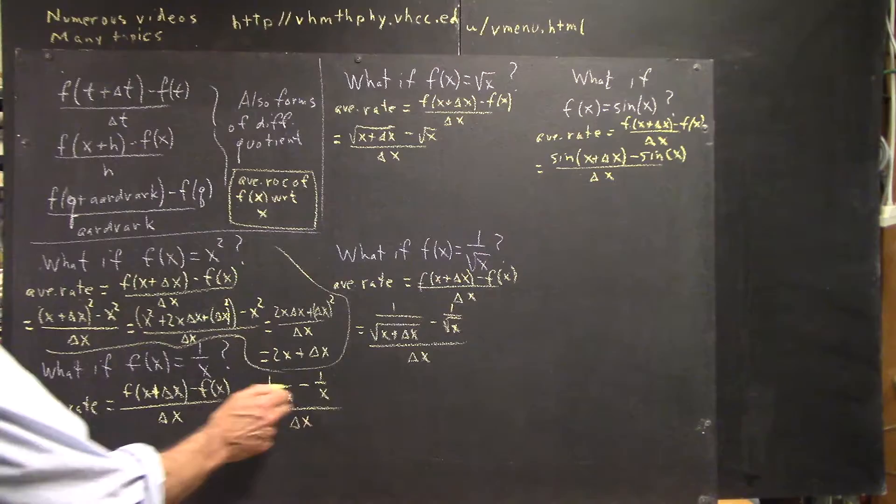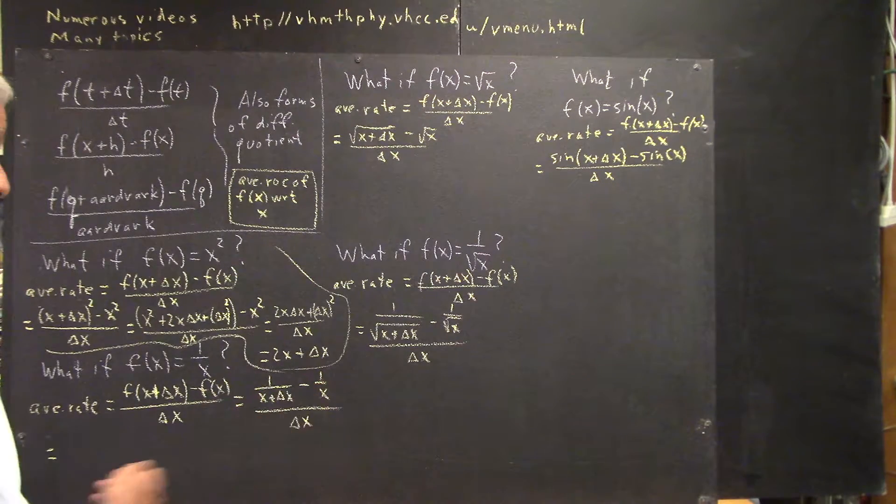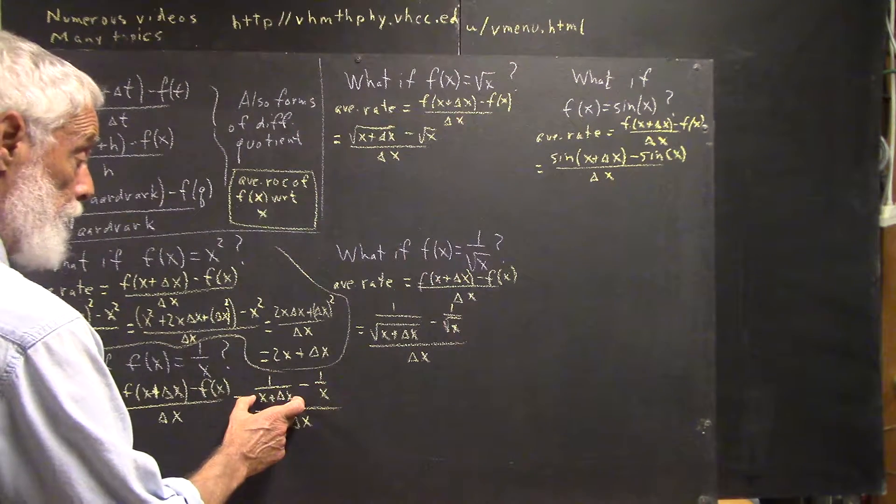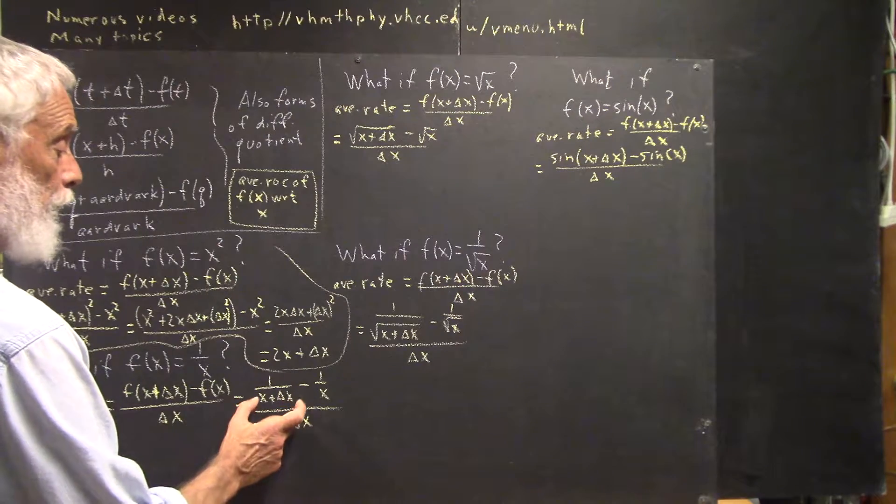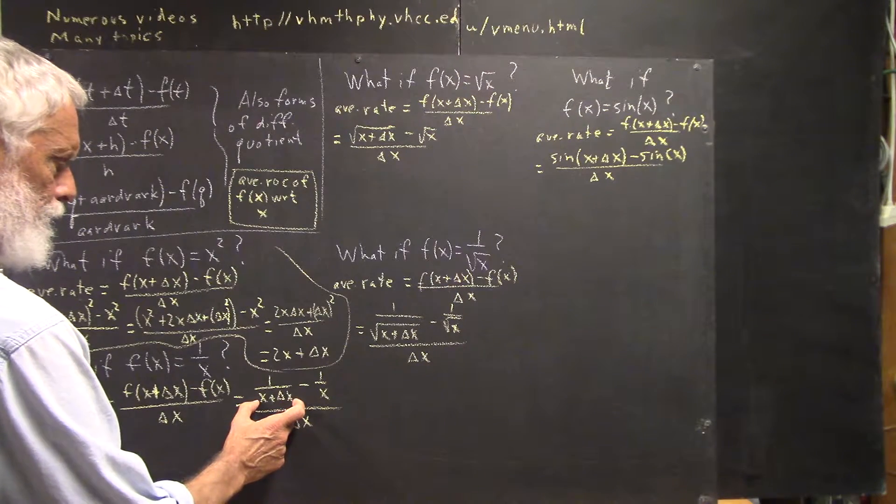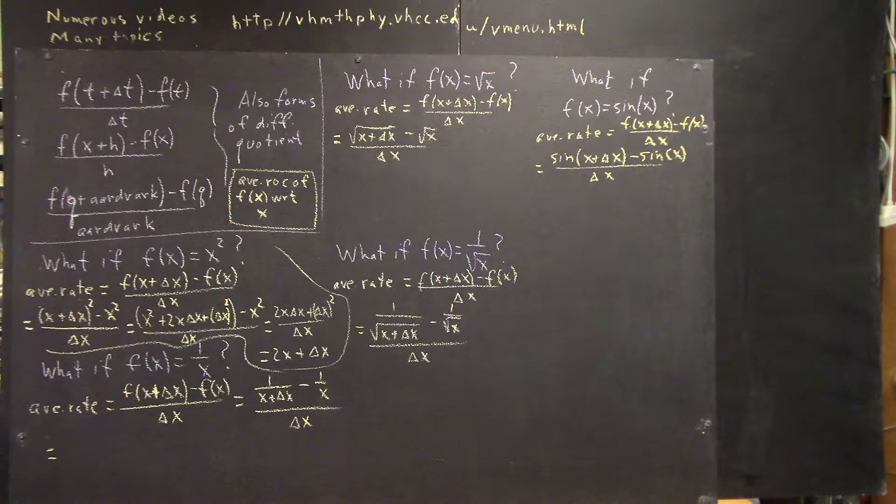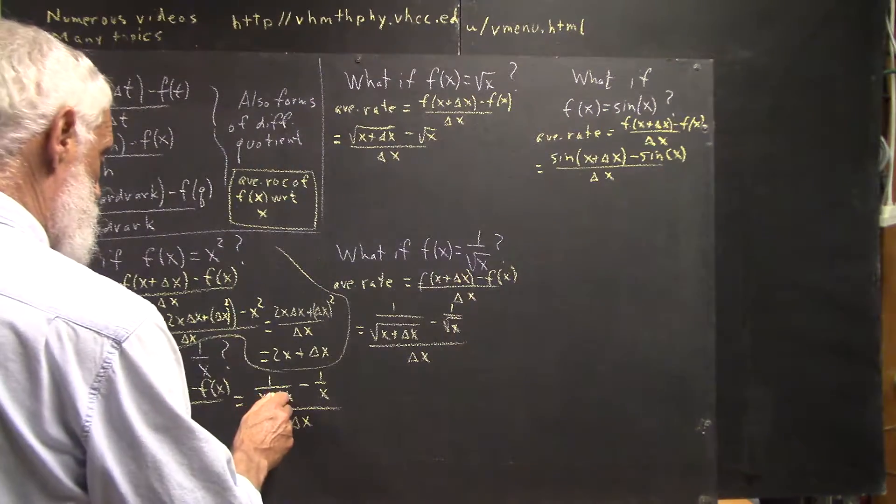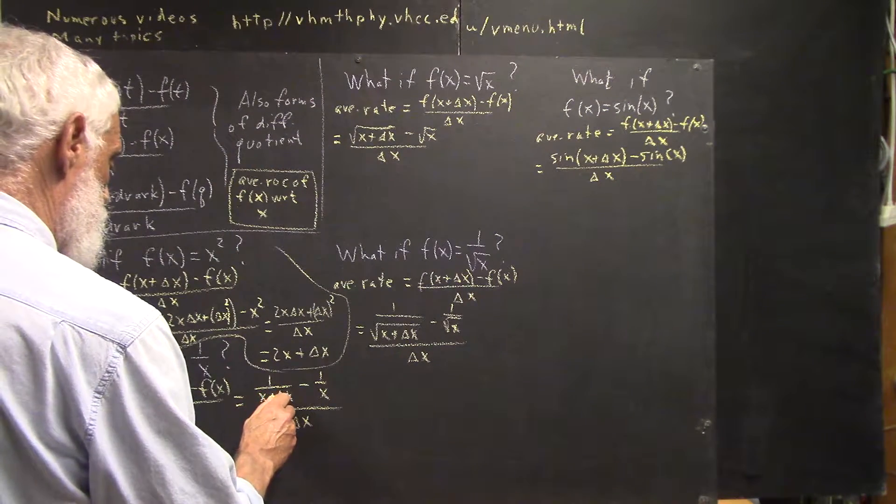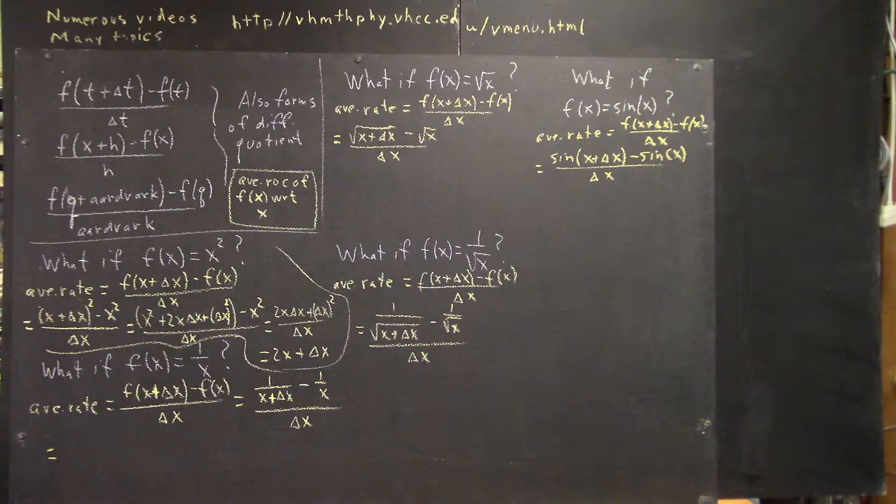Well, I need a common denominator. The common denominator will be, well, this denominator has to contain x plus delta x, it's got to contain x. That almost looks like a times there, although we know better. Let me make it just a little clearer. That's a plus, because when we're looking for a common denominator, that makes a big difference.